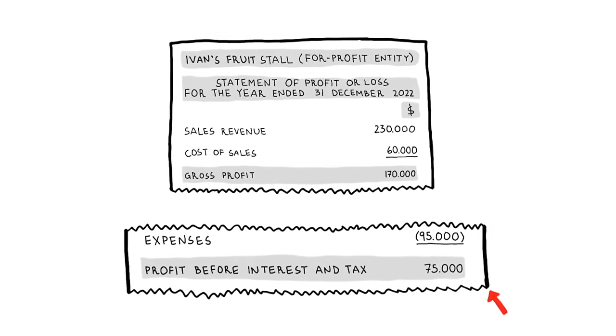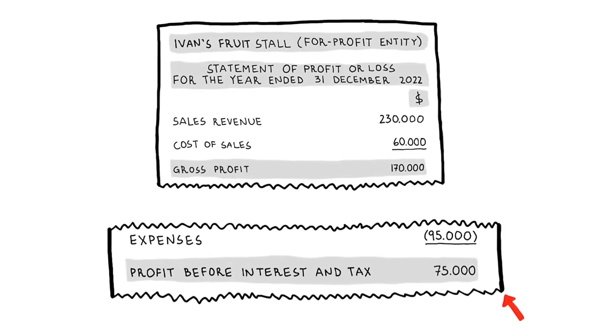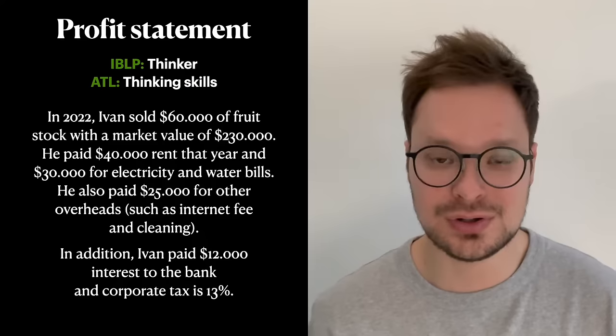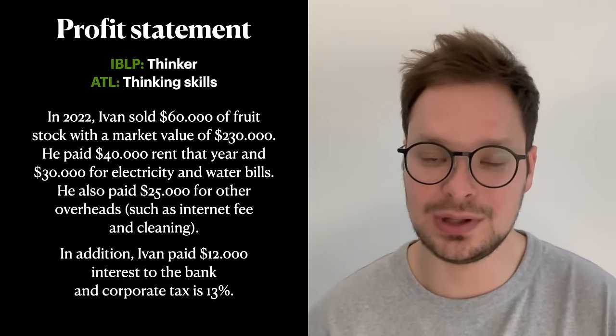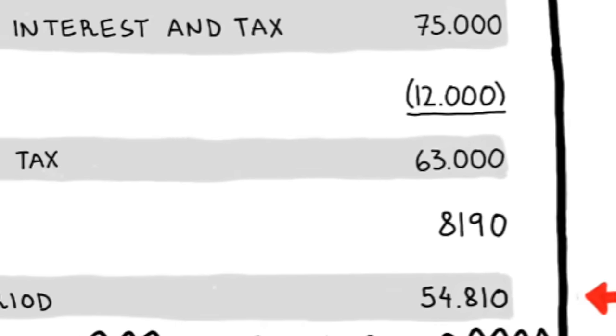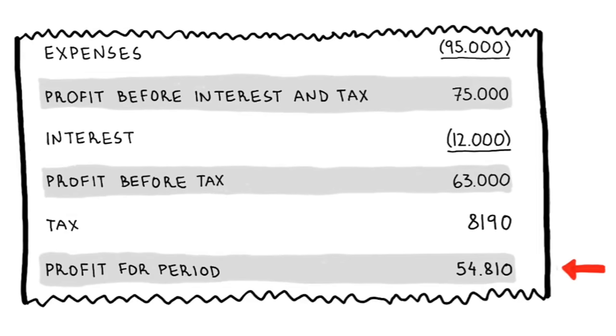Now let's say Ivan also paid $12,000 in interest and 13% corporate tax. After subtracting interest: $75,000 − $12,000 = $63,000. Tax = 13% × $63,000 = $8,190. Net profit after interest and tax — indicated as 'profit for period' — is $63,000 − $8,190 = $54,810. So far you know what the trading account is, and what the profit statement is. Now let's talk about the third part: the appropriation account.